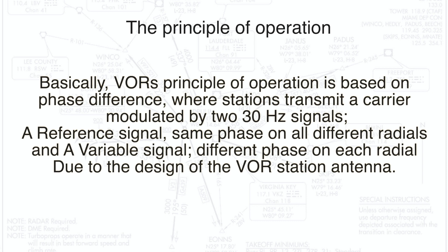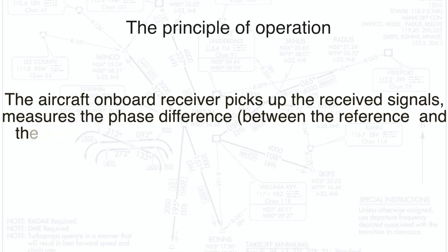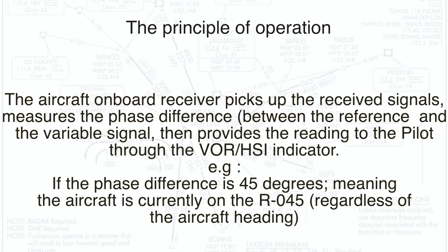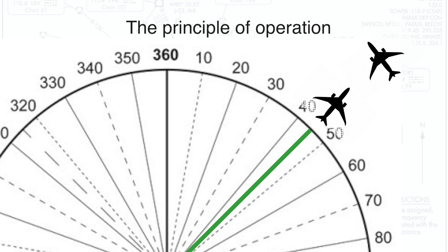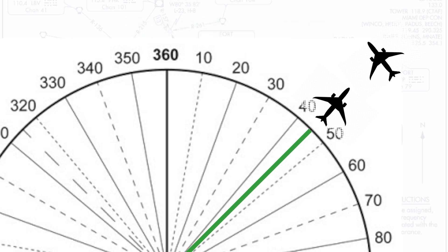The aircraft's onboard receiver picks up the received signals and measures the phase difference between the reference and the variable signal, then provides the reading to the pilot through the VOR or HSI indicator. For example, if the received and measured signal is 45 degrees, it means the aircraft is on a radial of 045, regardless of the aircraft heading. So two aircraft facing different directions can both be on the 045 radial.